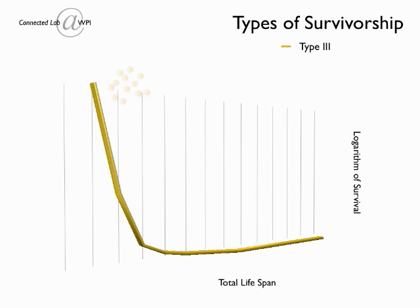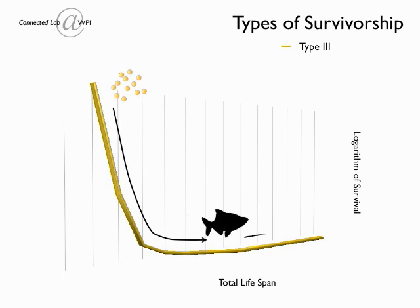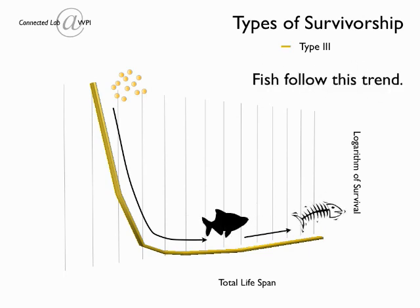Type 3 survivorship curves are concave and illustrate species with high mortality rates in early life. Most species with large numbers of offspring, such as invertebrates and fish, follow this trend.